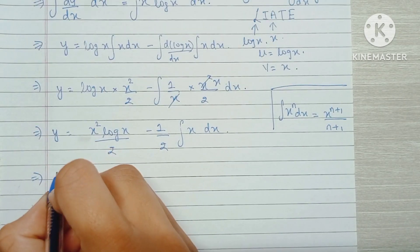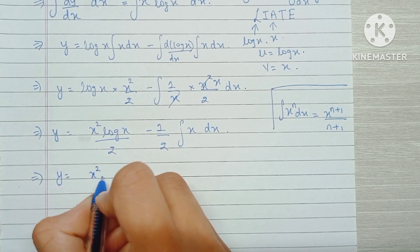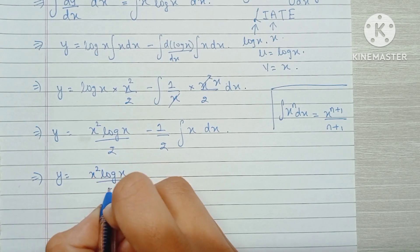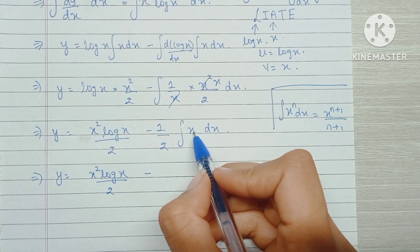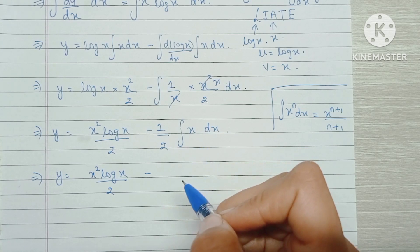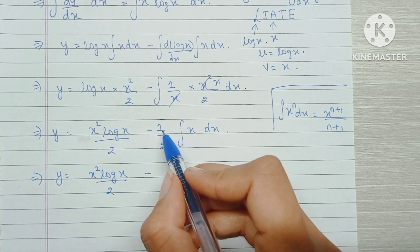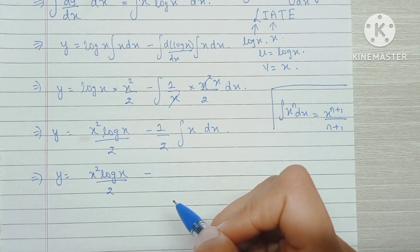So now we have y equals x² log x over 2 minus, again the integration of x is x²/2, and x²/2 times 1/2 becomes x²/4.